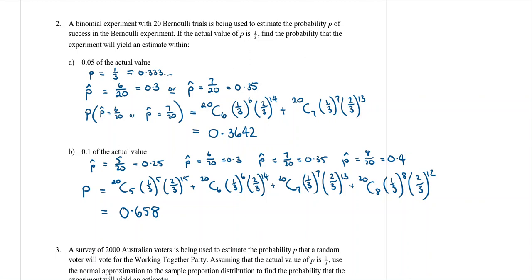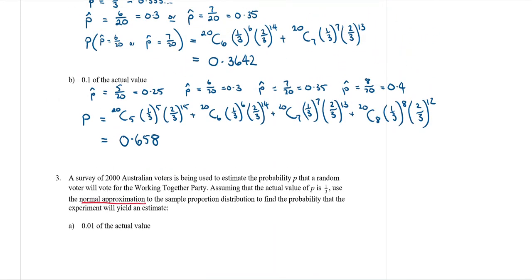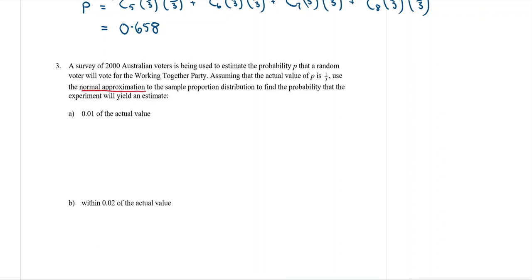Question three is similar but uses the normal approximation. A survey of 2,000 Australian voters estimates the probability p that a voter will vote for the working together party. With p = 1/3, use the normal approximation to the sample proportion to find the probability the estimate is within 0.01 of the actual value. With large samples, the normal distribution is much more accurate and avoids having to add many binomial terms together.